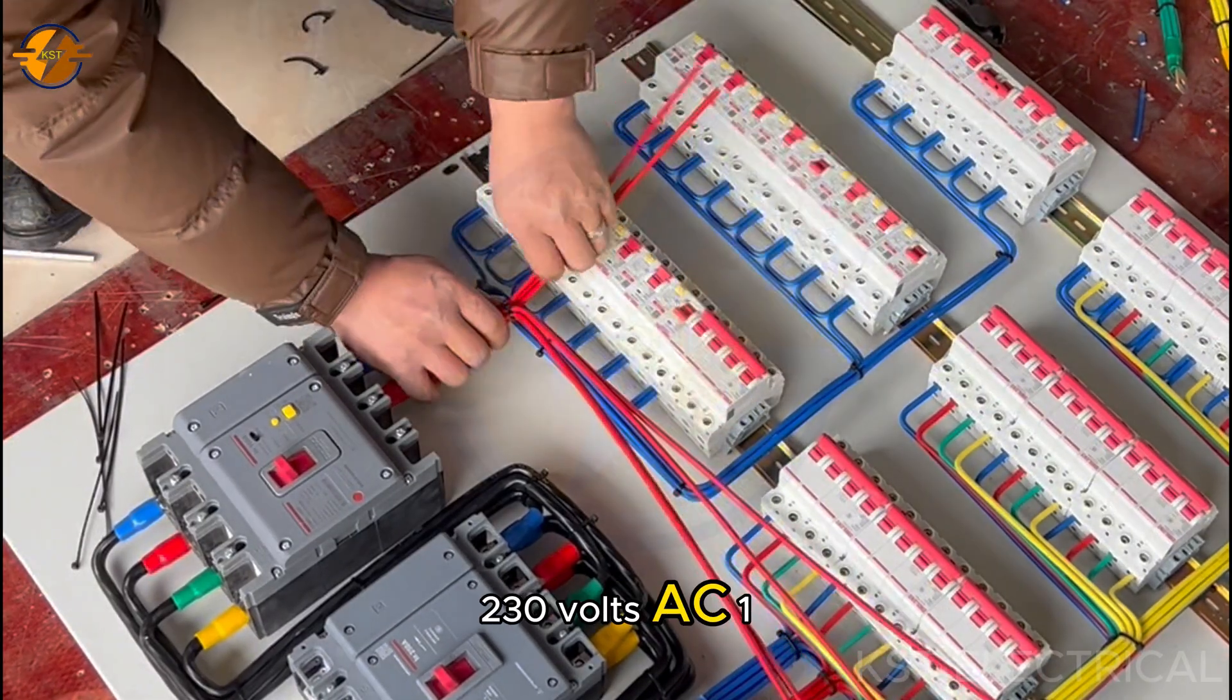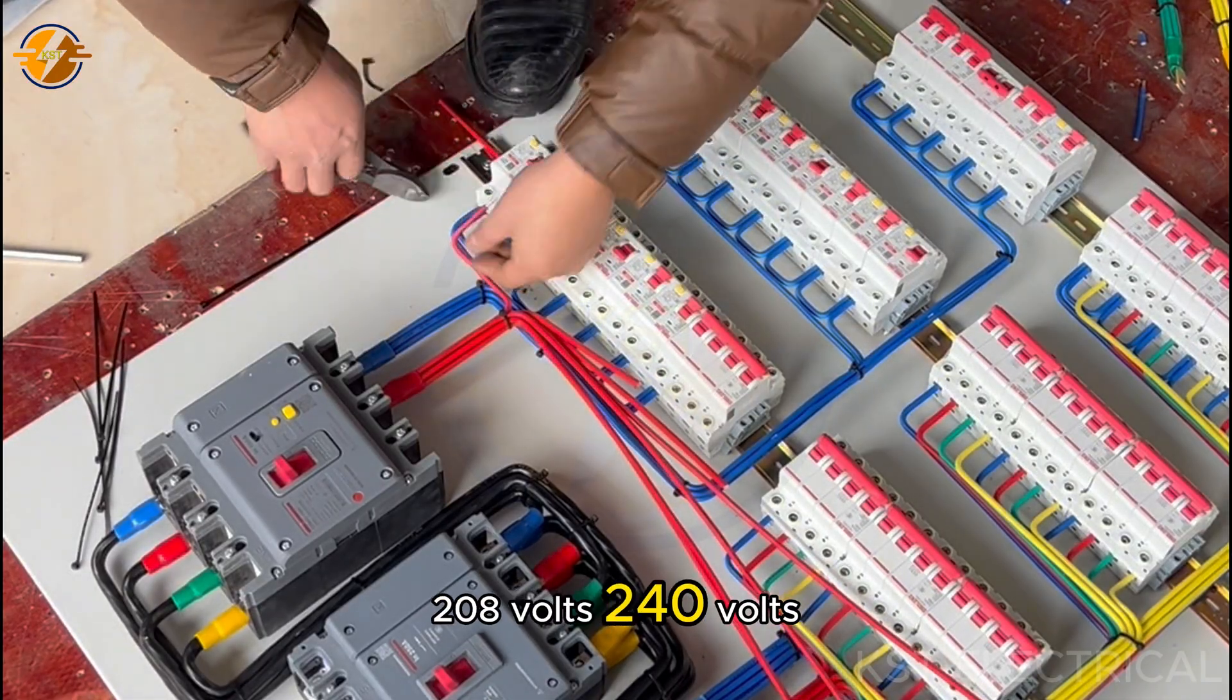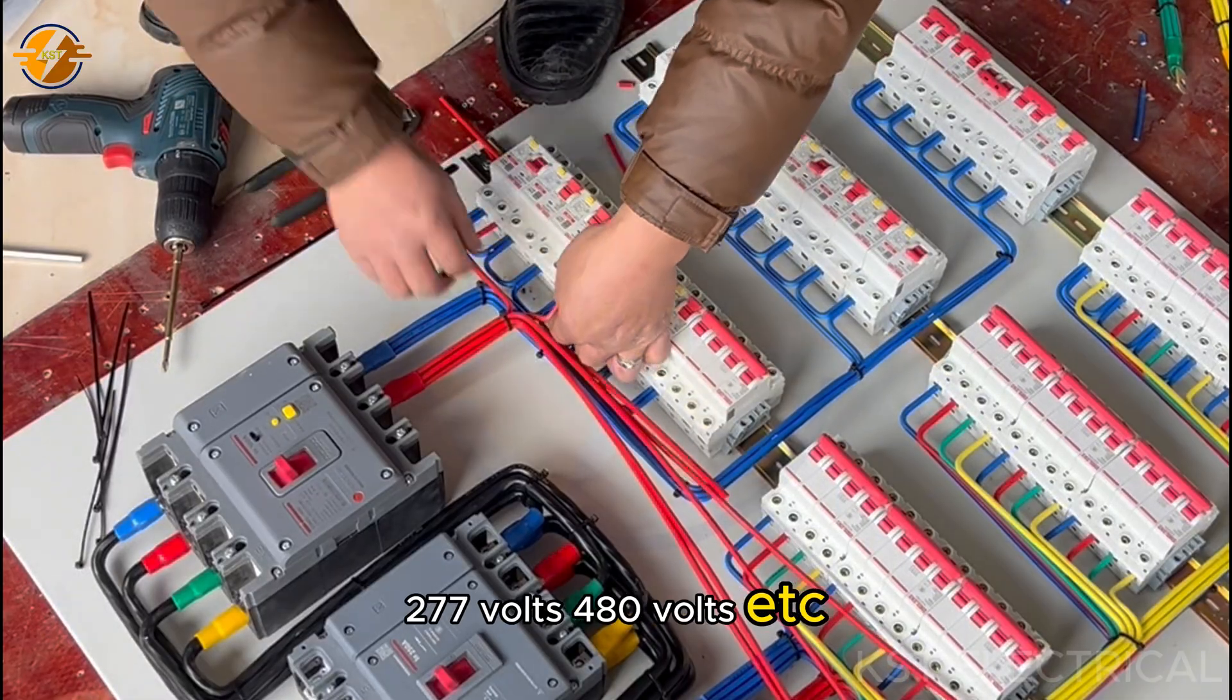There are 230 volts AC, 120V, 208 volts, 240 volts, 277 volts, 480 volts, etc. in the US.